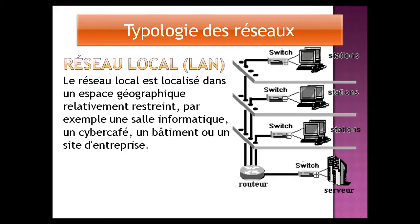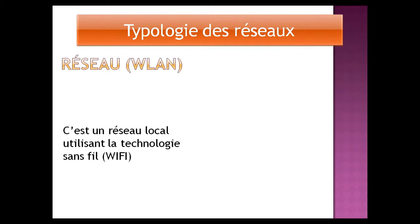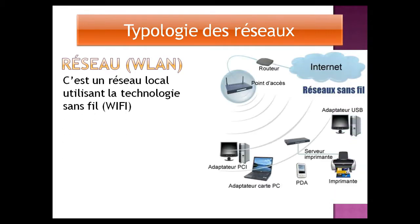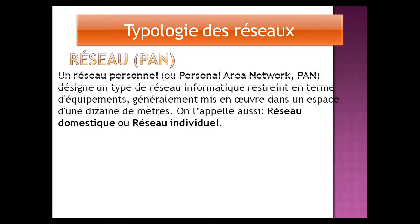On remarque que les ordinateurs du même local communiquent entre eux avec des liaisons électriques ou même des liaisons WiFi. Dans ce cas on parle du WLAN, c'est la technologie utilisant le WiFi. Puis on a le réseau PAN, un réseau personnel qu'on trouve dans une maison, restreint en termes d'équipements, dans un espace d'une dizaine de mètres. On l'appelle aussi réseau domestique ou réseau individuel.